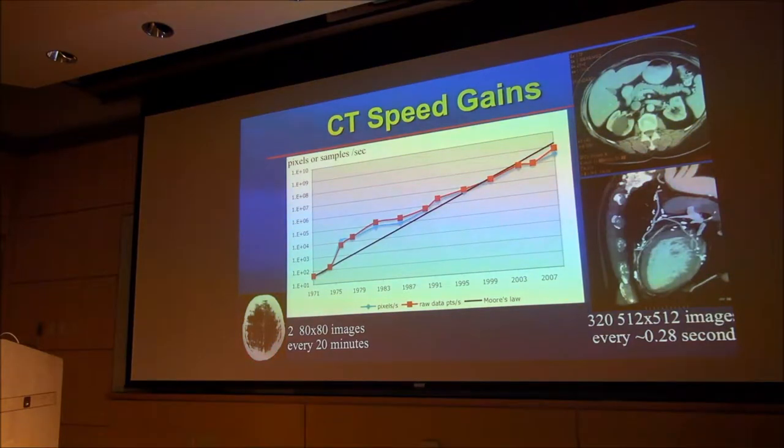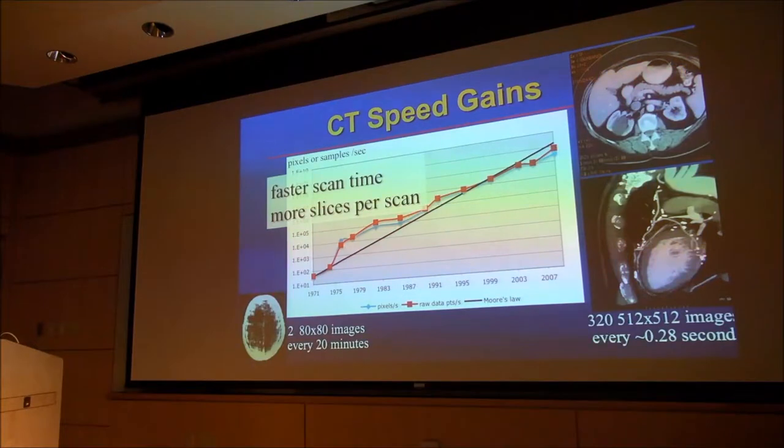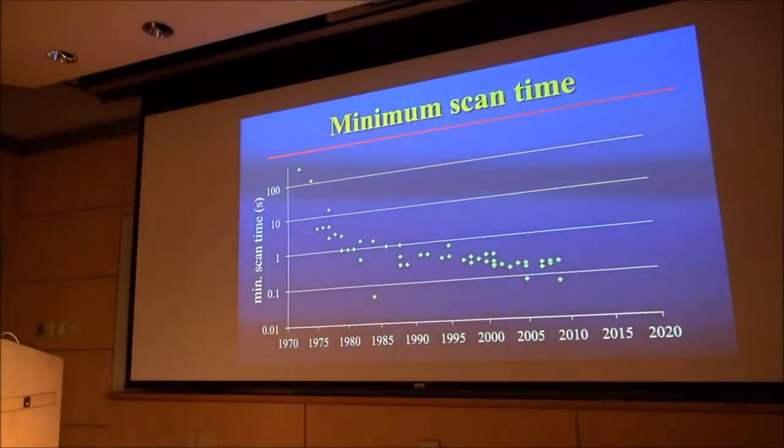Back to this slide on speed of CT as a function of time. How have we gotten this phenomenal increase? Part of it comes from faster rotation times. Gantry rotation times used to be on the order of minutes and now they're fractions of a second. The other part is more slices per rotation due to the multi-detector row scanner.